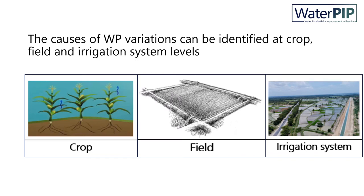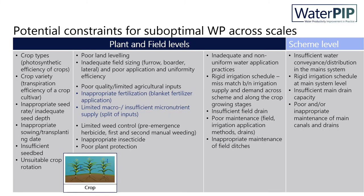The causes for water productivity variation or suboptimal water productivity can be identified at three levels: from left to right on the screen, we have crop, field and irrigation scheme levels. A number of potential constraints can be identified as causes for suboptimal water productivity across these scales.